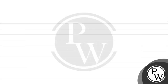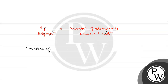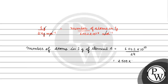Now we calculate the number of atoms of element A in 1 gram. We know mass = 1 gram and atomic mass = 24 grams per mole. The number of atoms in 1 gram equals Avogadro's number divided by 24, which is 6.022 × 10²³ divided by 24, giving us 2.509 × 10²².